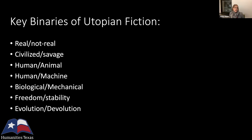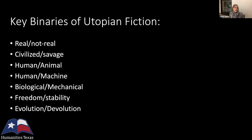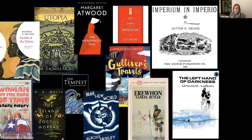There are also key binaries and themes that come through in utopian fiction and come into play in so many of these texts. These include: the difference between the real and the not real; the relationship between the so-called civilized and the savage; the boundary between the human and animal as well as the human and the machine, or the biological and the mechanical; the tension between the desire for freedom and the need for stability; and the potential for both evolution and devolution.